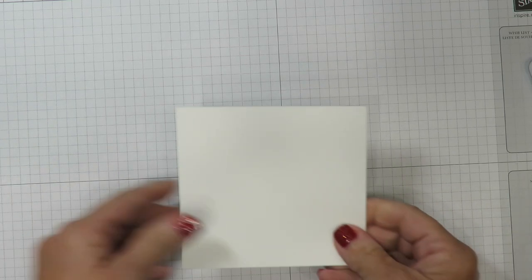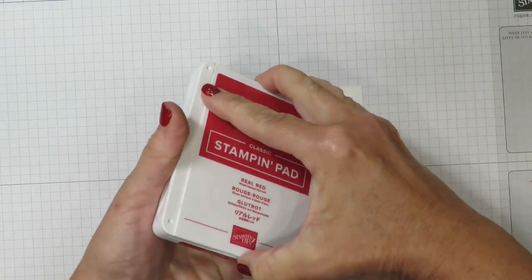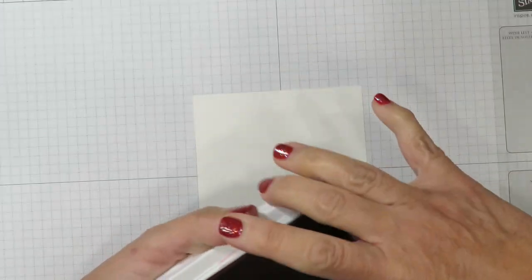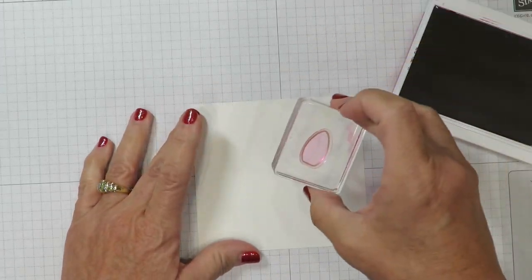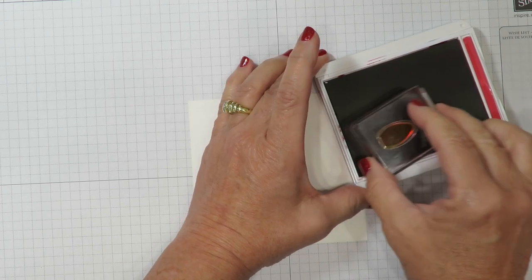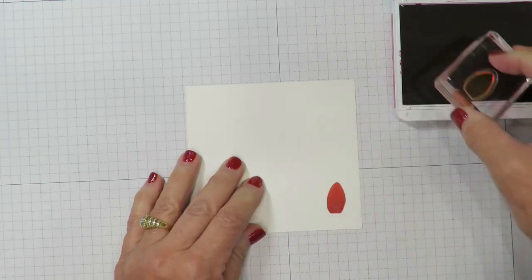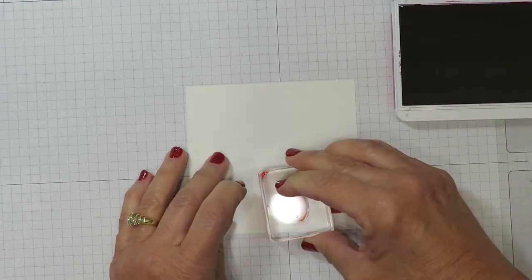I'm going to set that aside and I'm going to bring in a scrap piece of Whisper White cardstock. I'm going to bring out the Real Red ink pad first and I've mounted that light bulb image so I'm going to ink that up and I'm going to stamp two of these just to make it easier when I use the punch. There's one and there's two.